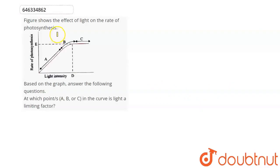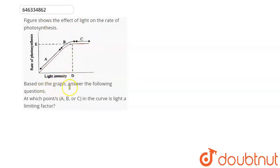The question is: Figure shows the effect of light on the rate of photosynthesis. Based on the graph, answer the following questions. At which points — A, B, or C — in the curve is light a limiting factor?